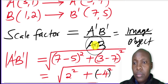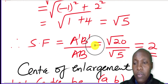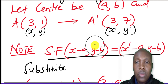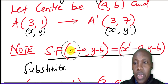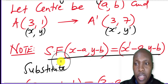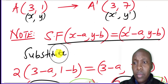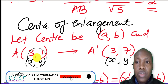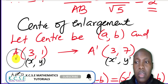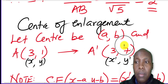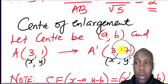Now we move on to finding the center of enlargement. There's an important formula I want us to note — this is the easiest way to get the center of enlargement, but it only works if you already have the scale factor. We let the center be (A, B), and then we pick one point and its image. I prefer to pick A(3,1) and its image A'(3,7).